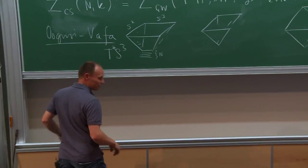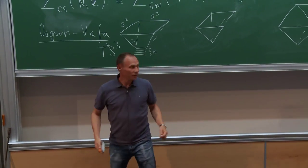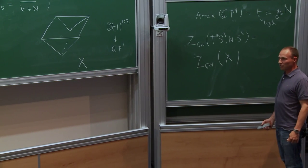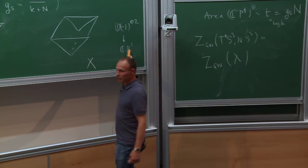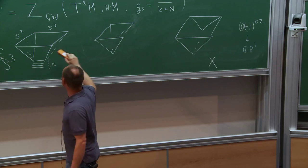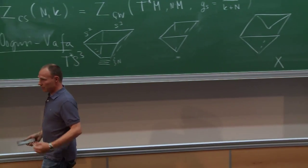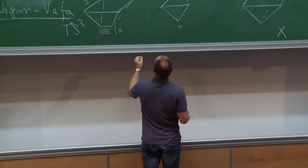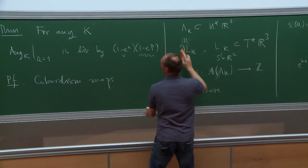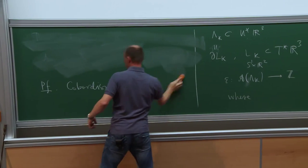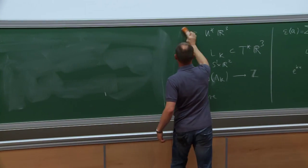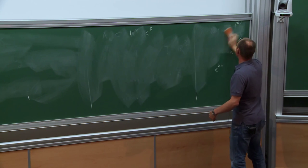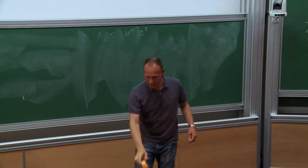Now we want to include knots in this story. There is a way to do so, due to Ooguri-Vafa. In order to include knots, we take T*S^3 with n copies of the zero section, and then we add the conormal L_K of the knot.